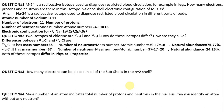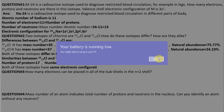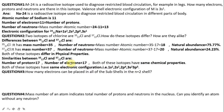Chlorine-35 natural abundance is 75.77%. Chlorine-37 has mass number 37, and the number of neutrons is 37 minus 17 equal to 20 neutrons. Natural abundance for Chlorine-37 is 24.23%. Now for similarities: number of protons is the same, 17 protons and 17 electrons. Both have the same chemical properties and the same electron configuration: 1s2, 2s2, 2p6, 3s2, 3p5.